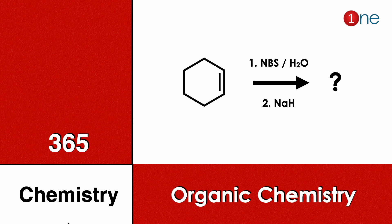Welcome to One Chemistry. This is the 365 Chemistry Series — organic chemistry questions. Here you have cyclohexene. You are using NBS and H₂O, and next you are using sodium hydride. Find what will be the final product.